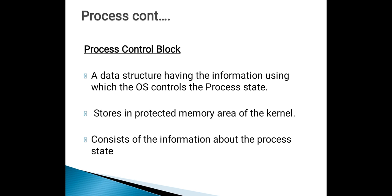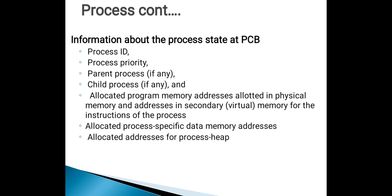It is stored in a protected memory area of the operating system. A PCB consists of the following information about the process state: process ID, process priority, parent process if any, child process, allocated program memory addresses, allocated process-specific data memory addresses, and allocated address for process heap. Process heap means the data generated during the process run. So, a PCB will have an address for newly generated data that is generated during the process run.